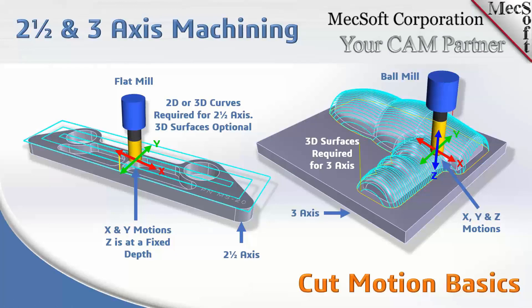Let's talk about the difference between two-and-a-half axis and three axis — basically it's defined by how the tool moves. In 2.5-axis, shown on the left, the tool can move in X and Y simultaneously but is fixed in Z. You define the depth for the tool to cut, it stays fixed at that depth and moves in X and Y, and that movement is contained by the control geometry you select.